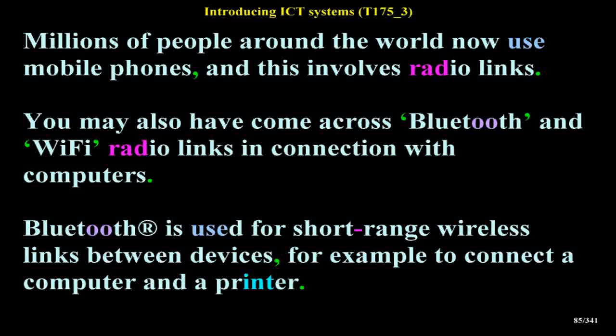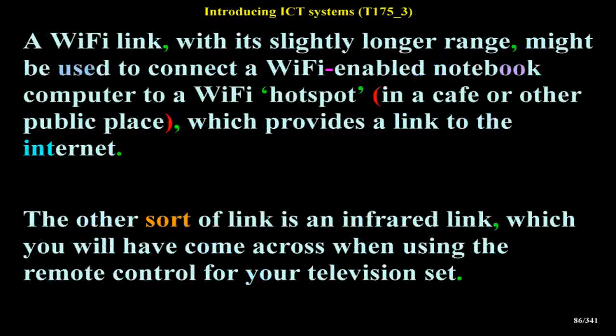Bluetooth is used for short-range wireless links between devices, for example to connect a computer and a printer. A Wi-Fi link, with its slightly longer range, might be used to connect a Wi-Fi-enabled notebook computer to a Wi-Fi hotspot in a cafe or other public place, which provides a link to the Internet. The other sort of link is an infrared link, which you will have come across when using the remote control for your television set.